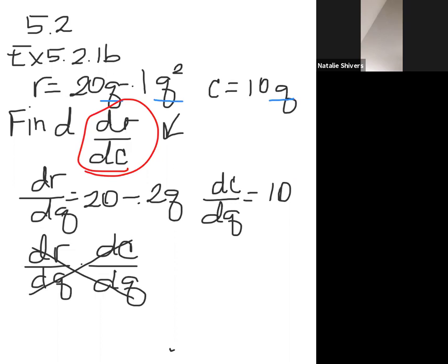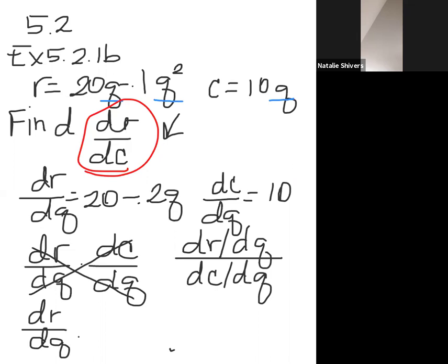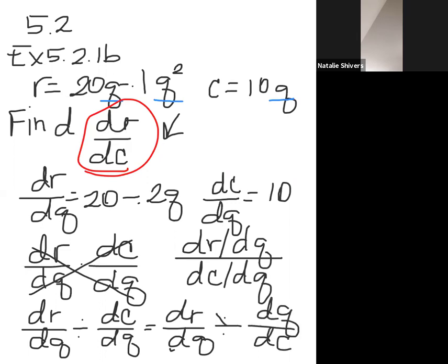So what I'm going to do is divide, so I get dr dq over dc dq. And the reason why this one works is if I write it longhand, I'm going to put a division sign, and what happens is it looks like this one, I flip the second one. I get dq over dc. Sorry, this is a times now, and the dq's multiply out, and I get dr dc like I want it. So what I need to do here is substitute the equations. So I'm going to put 20 minus 0.2q over 10. Let's see if I can go to the next page.